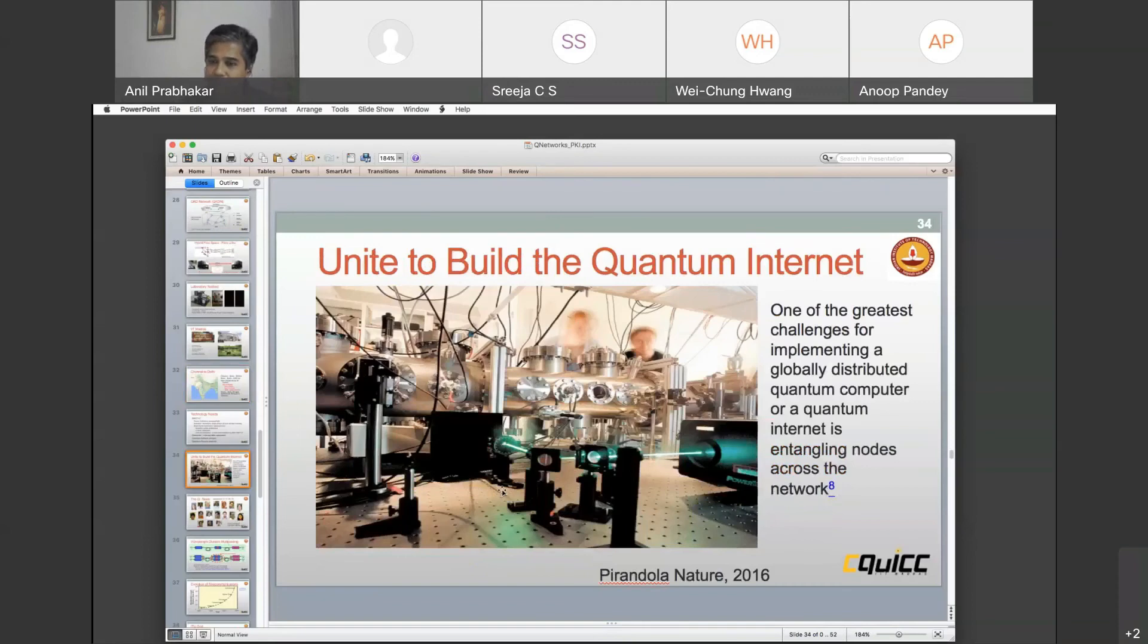The quantum internet is something that is going to become a reality for two reasons. One is to secure our public infrastructure against quantum computers. The second reason is to connect two quantum computers together so that you can do parallel computing, parallel quantum computing. These are sort of the ideas that affect what the future will hold for you.